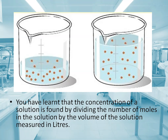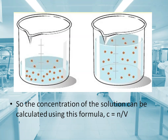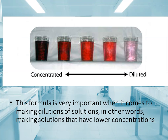You have learned that the concentration of a solution is found by dividing the number of moles in the solution by the volume of the solution measured in liters. The concentration can be calculated using the formula C is equal to number of moles divided by volume. This formula is very important when it comes to making dilutions of solutions — in other words, making solutions that have lower concentrations.